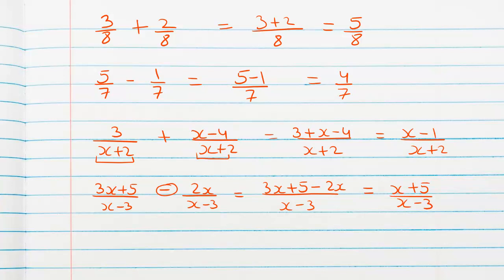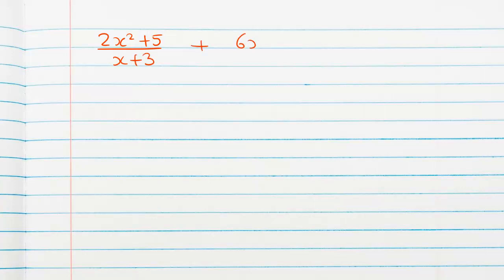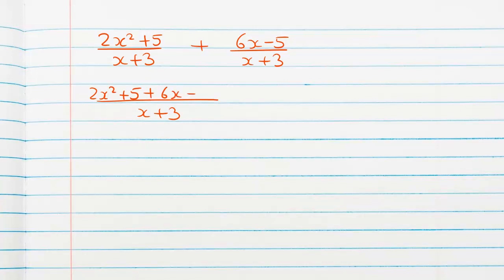This seems very easy but we have to move to more complex problems step by step. We have (2x+5) over (x+3) plus (6x−5) over (x+3). The common denominator is x+3 and the numerator is 2x plus 5 plus 6x minus 5. The −5 and +5 cancel, and for 2x and 6x we take 2x as common — inside will be (x+3) — and the (x+3) cancels, leaving 2x as our answer.